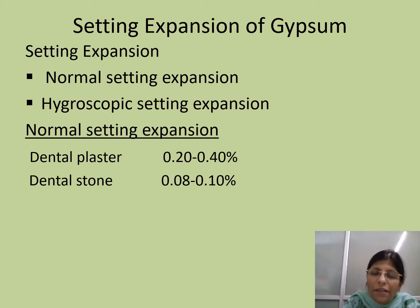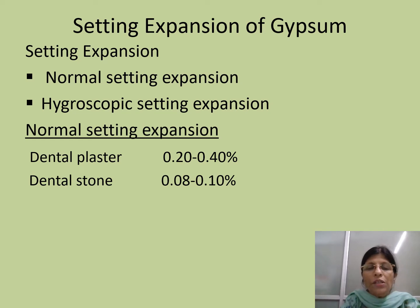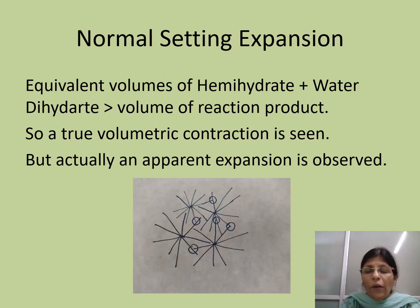Hygroscopic setting expansion is the setting expansion which occurs in presence of water. These are the values for normal setting expansion: for dental plaster it is 0.02 to 0.4 percent, and for dental stone it is 0.08 to 0.1 percent.